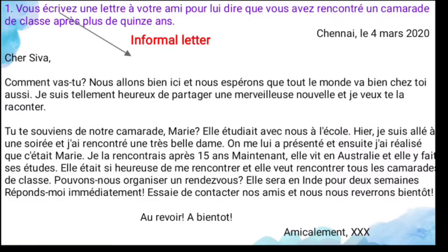First, you have to find whether the letter is formal or informal. Here you are writing to your friend only, so this is an informal letter. You write to your friend to tell him that you have met a classmate after 15 years. The place and date is Chennai and the date is le quatre mars deux mille vingt, that is 2020.